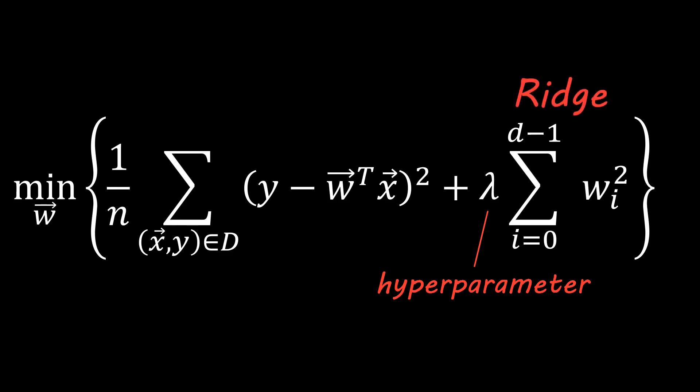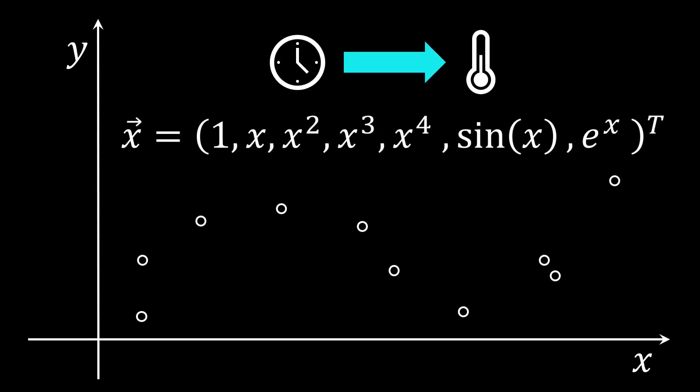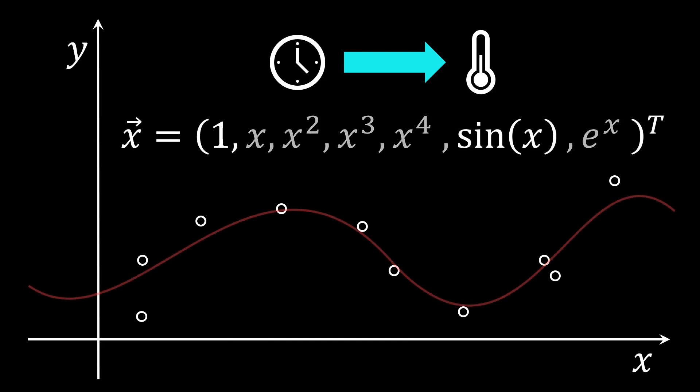Going back to our approximation problem, we can model our feature vector with many different guesses. The regularization can then simply pick out those that it finds useful. Using regularization we thereby get a much smoother approximation. Note that the approximation does not interpolate the data anymore, as it implicitly trades off the complexity of the solution against the accuracy on the given data.